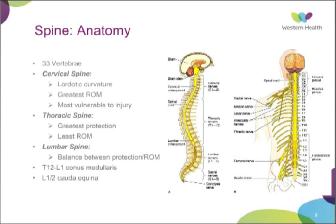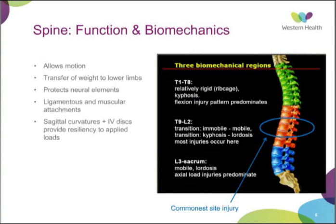In terms of the function and biomechanics of the spine: the spine allows motion, it allows transfer of weight from the trunk to the lower limbs, it provides protection for all neural elements, and has ligamentous and muscular attachments which are very important in spine trauma and determining stability. The sagittal curvatures — lordosis and kyphosis — as well as the intervertebral discs, provide resiliency to applied loads.